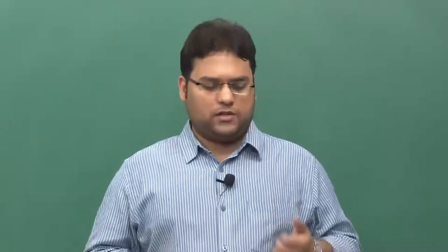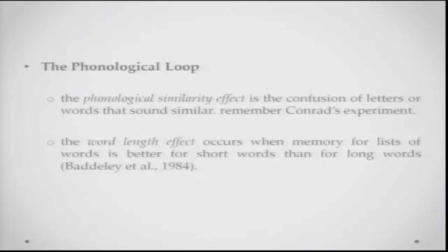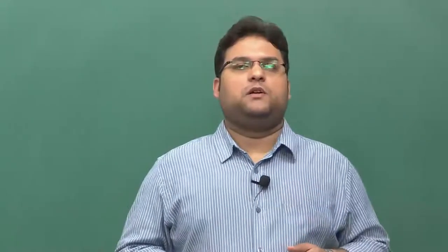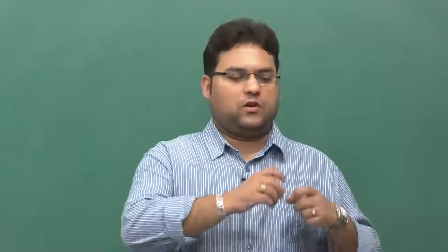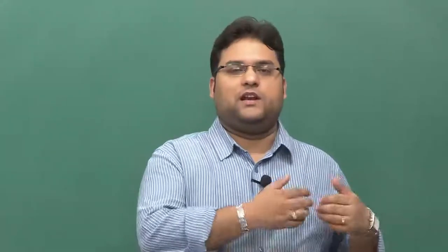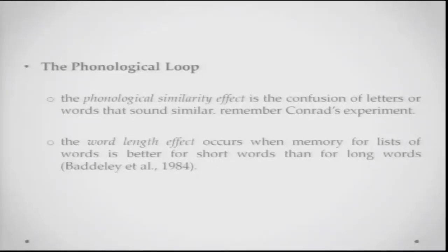One of the major findings related to the phonological loop is called the phonological similarity effect: if you are trying to maintain letters or sounds that are very similar, they may be confused with each other. Conrad's experiment, in which people were asked to remember letters of the English alphabet, showed that mistakes were made predominantly on letters which sounded very similar to each other — like S and F for example.